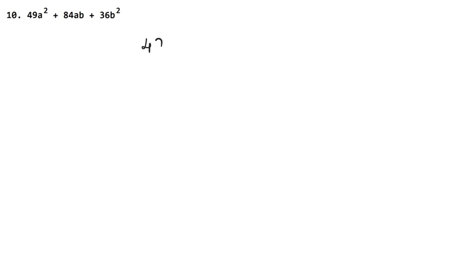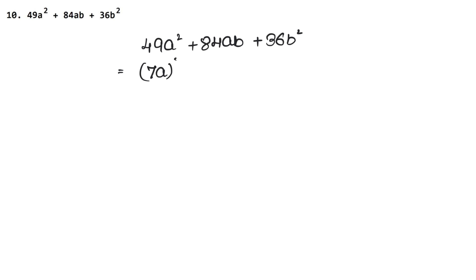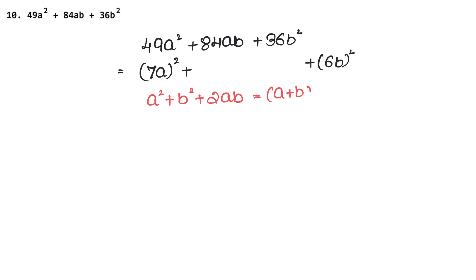In this question we have to factorize 49a² + 84ab + 36b². Look: 49a² — since 49 is 7 squared and a² is a squared, we write (7a) whole square. And 36b² — since 36 is 6 squared and b² is b squared — we write (6b) whole square. We will use the formula a² + b² + 2ab = (a + b) whole square.